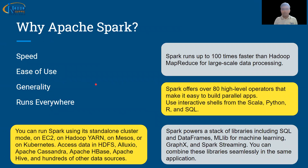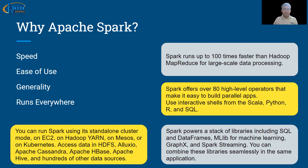Ease of use: Apache Spark provides 80 plus high-level operators in different programming languages, making it easy for developers to create applications that are parallel in nature. It also provides interactive shells for Python, SQL, R, and Scala — another way developers can easily write and test code interactively.